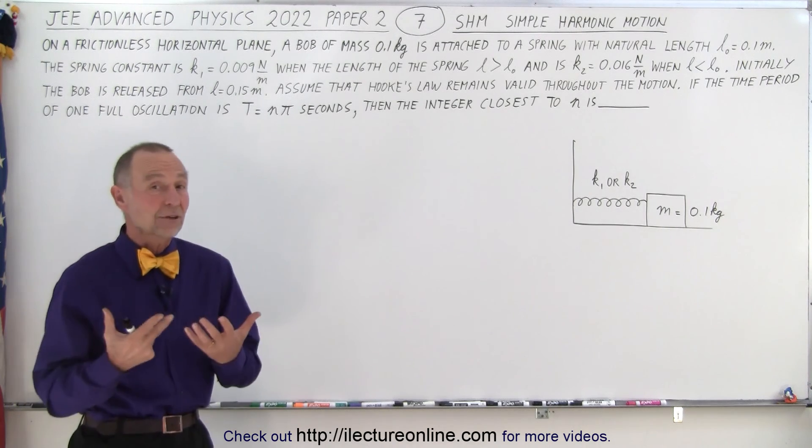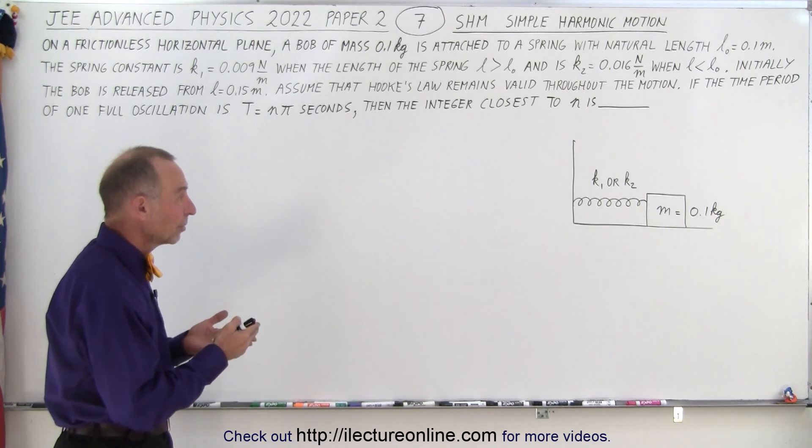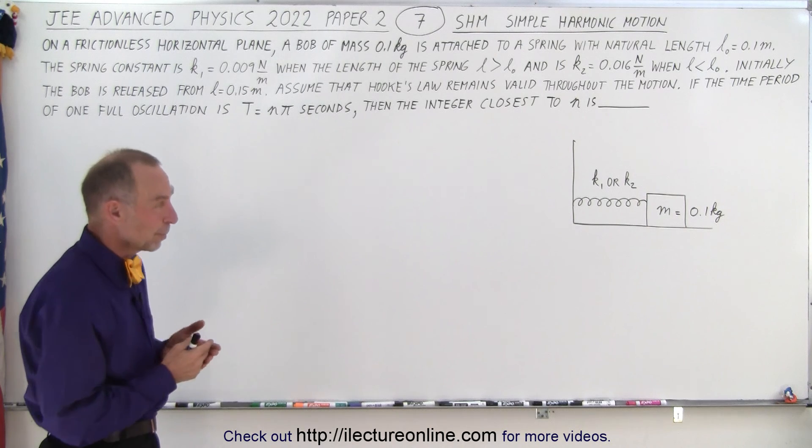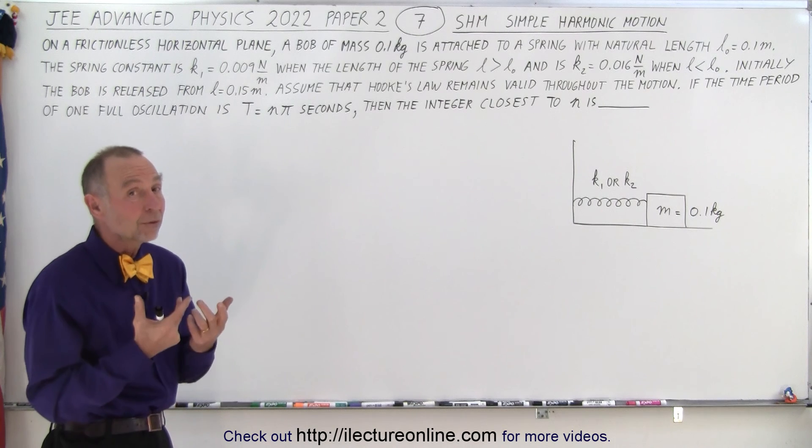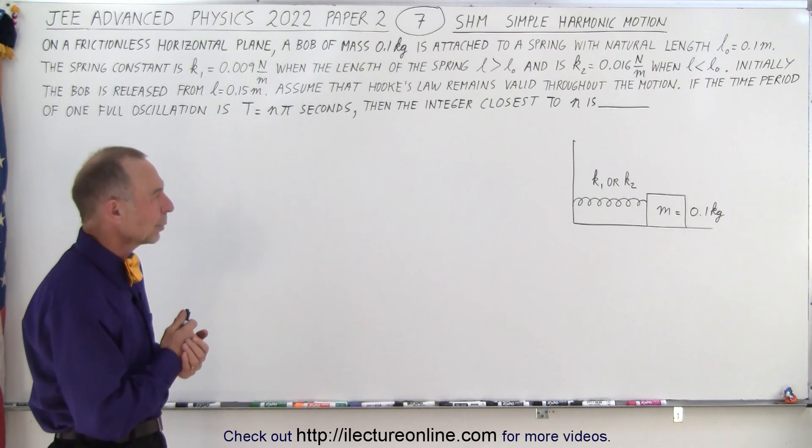So essentially what they're asking us is to find the period of oscillation. But we have two different spring constants so we'll have two different frequencies and how do we deal with that.